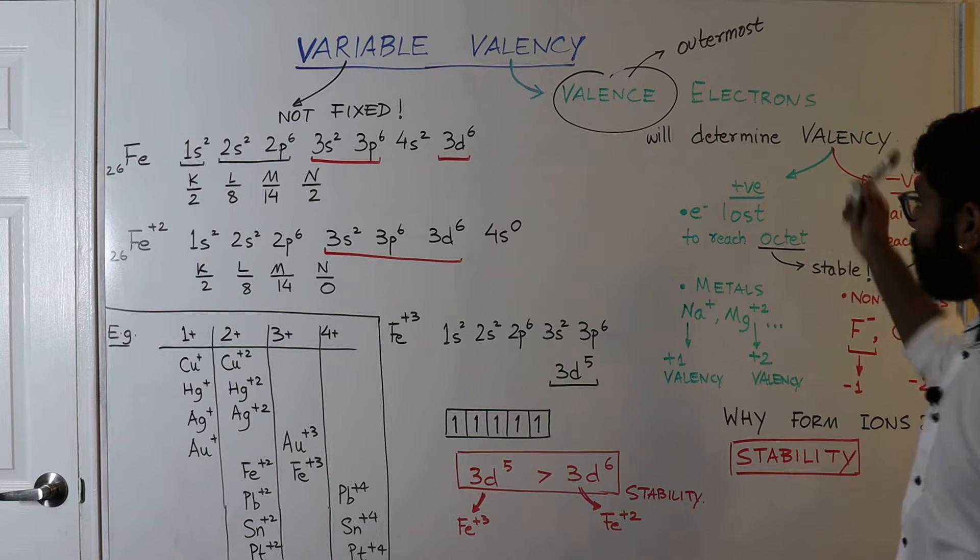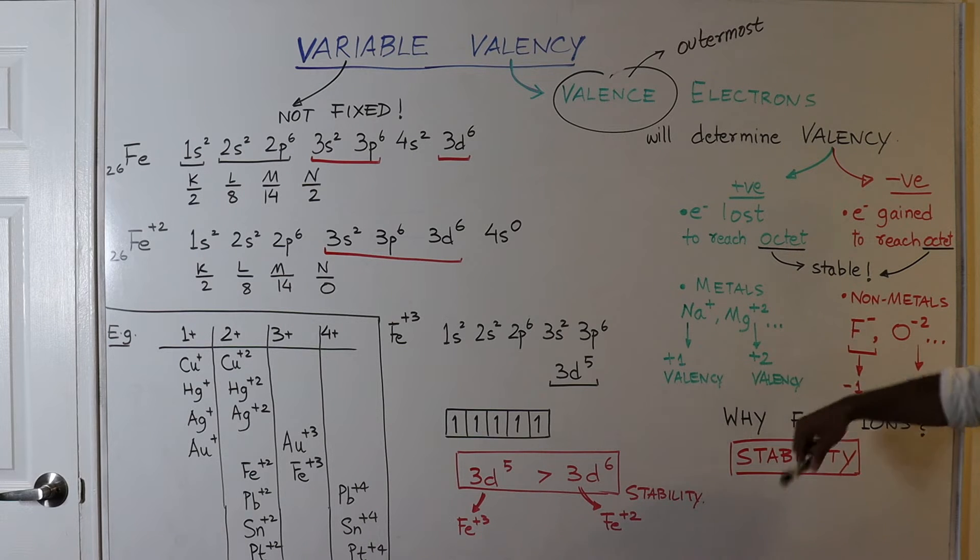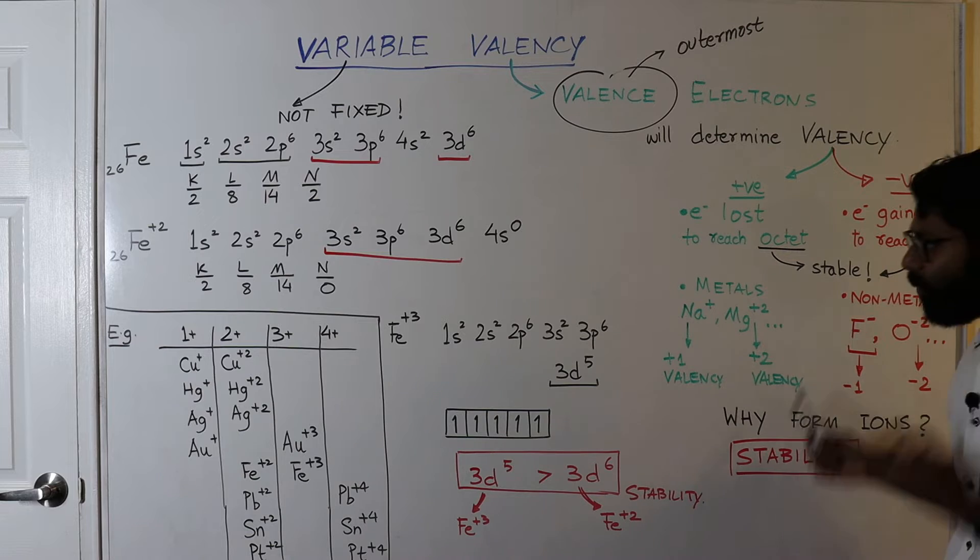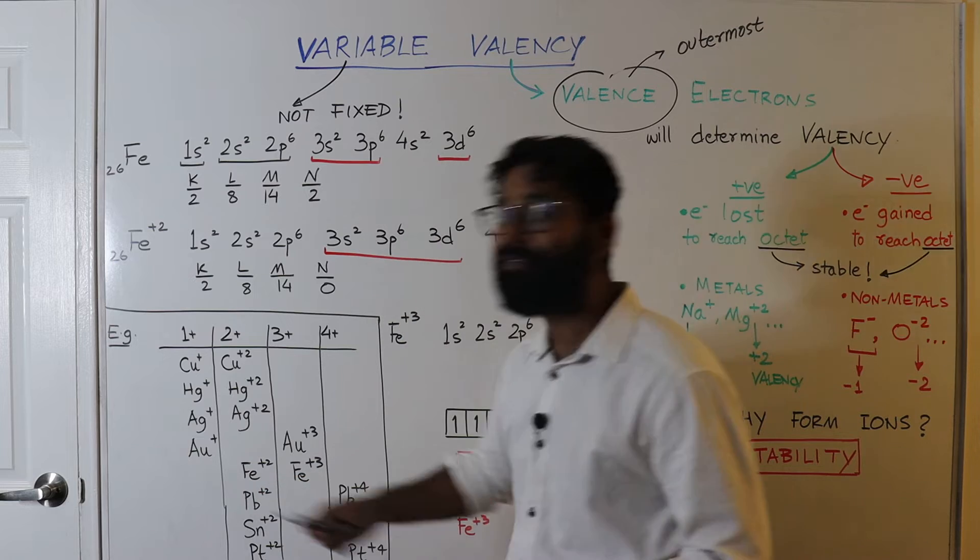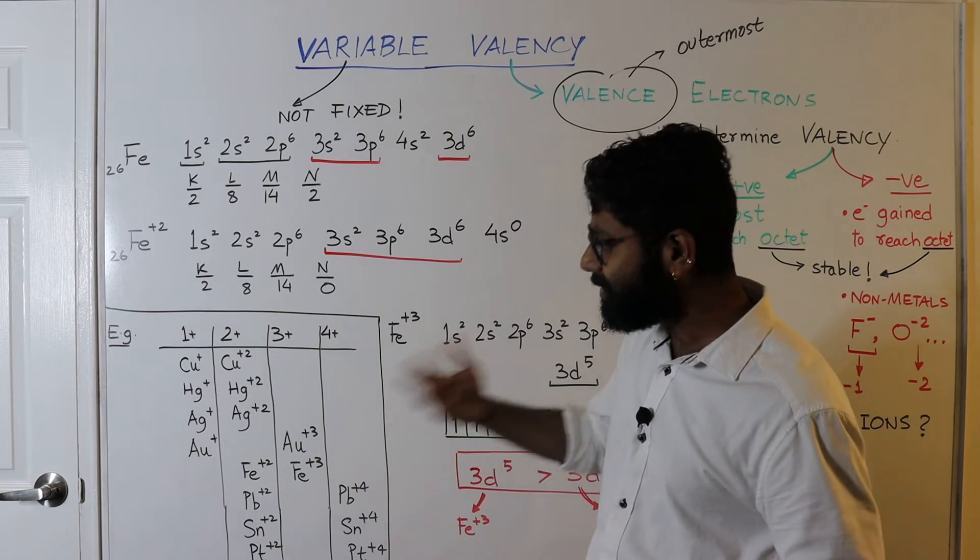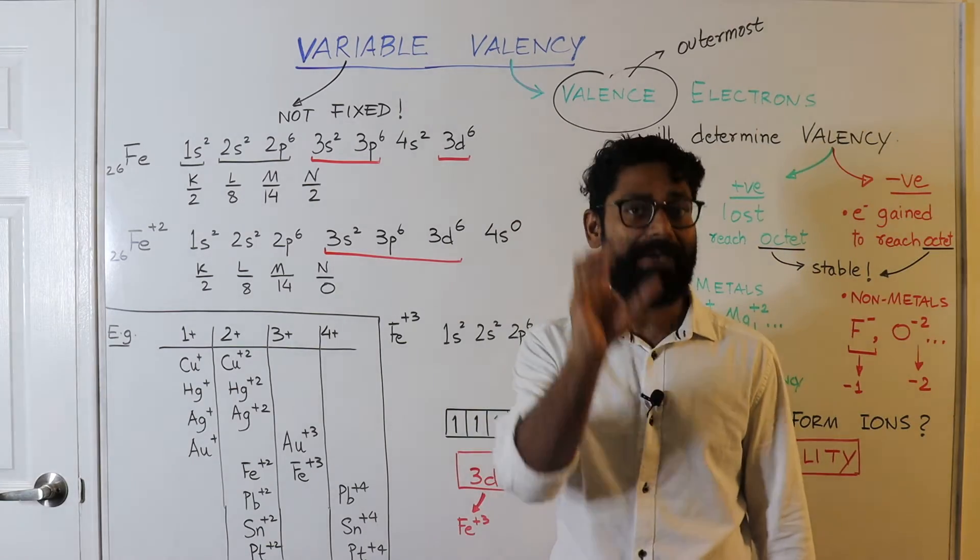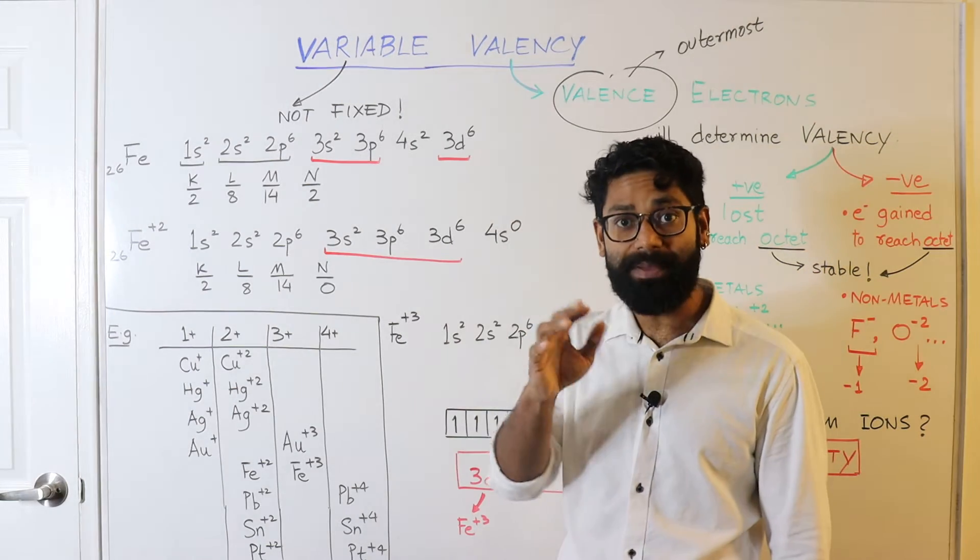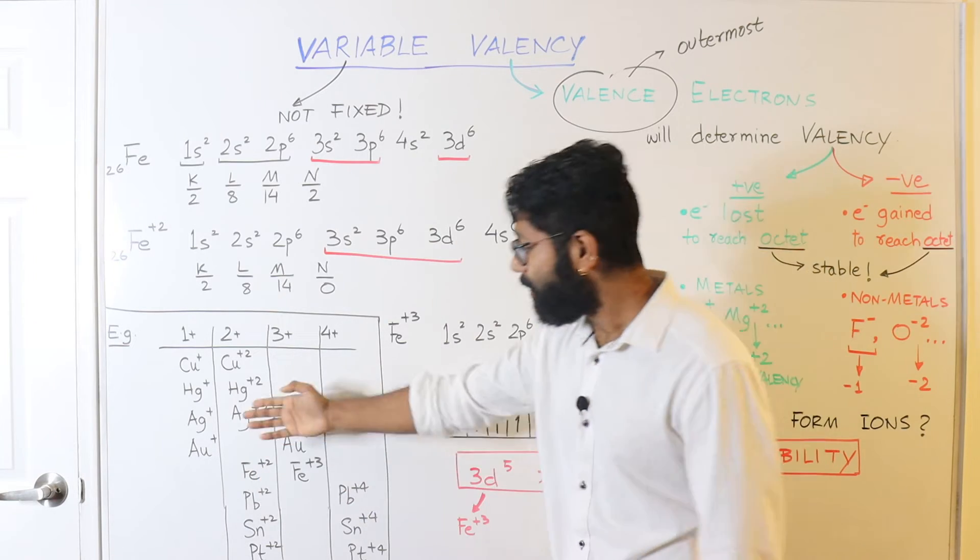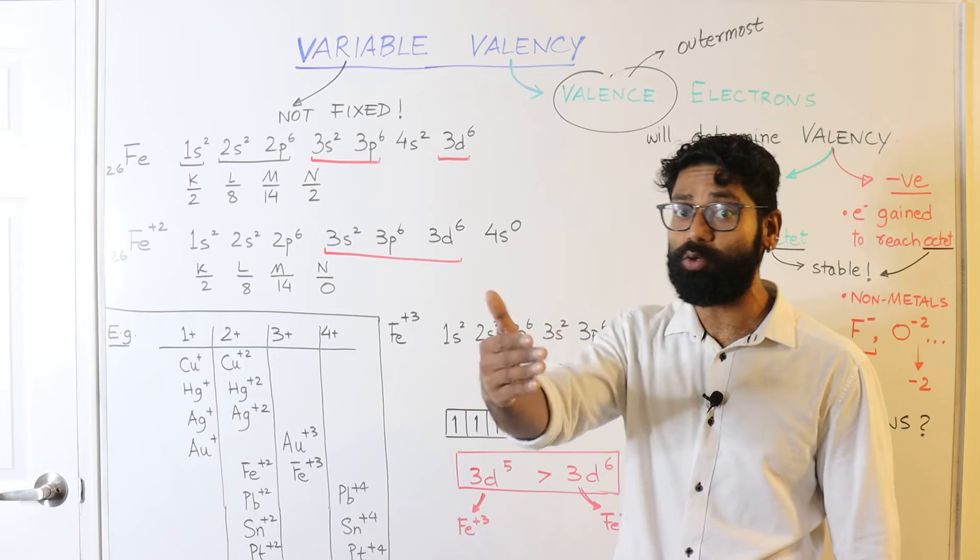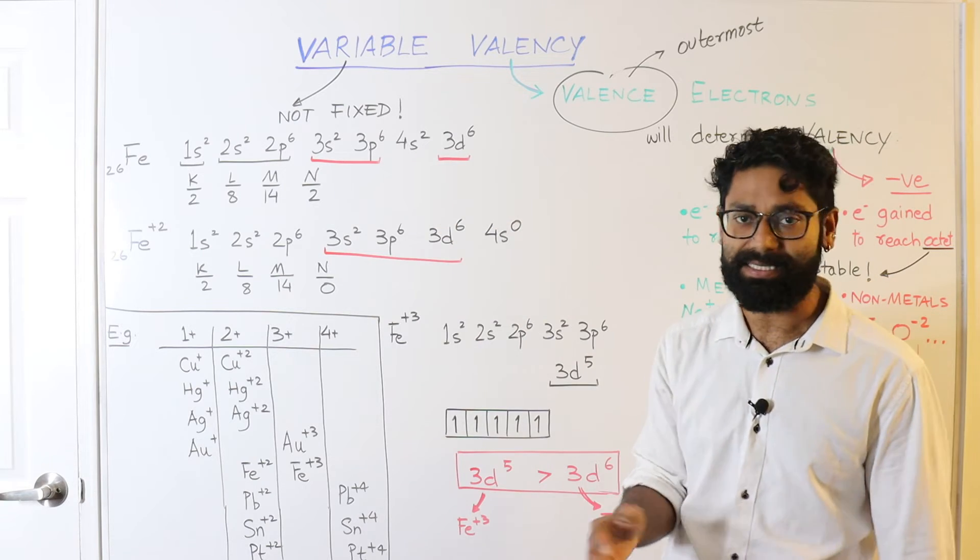Now, once we have understood that, the valency, you are losing one electron to become Na+, and therefore you are becoming more stable. Then why do things like Fe exist in two valencies? We know this is the concept of variable valency, in which a same atom of the element is forming two or more than two, in some cases, having two or more than two valencies. So this concept is called variable valencies.